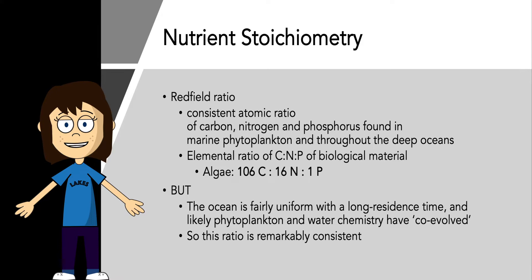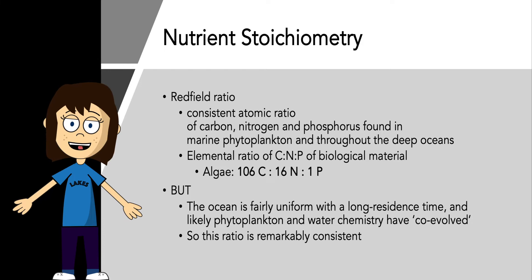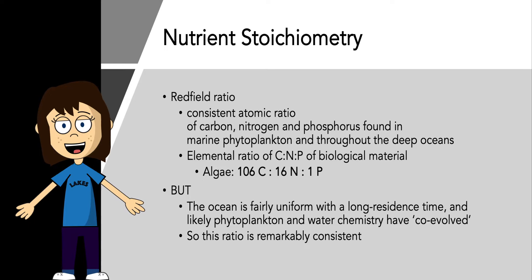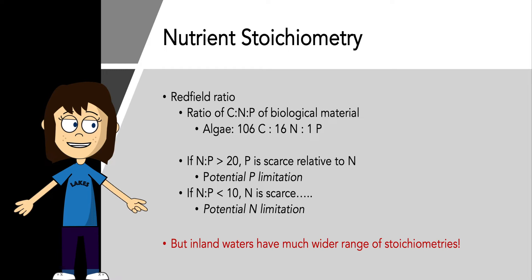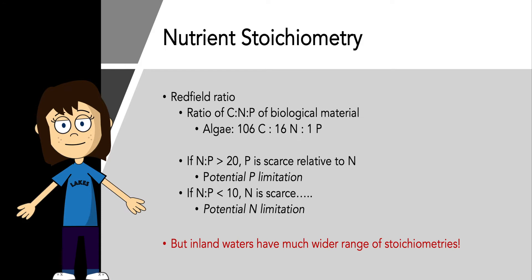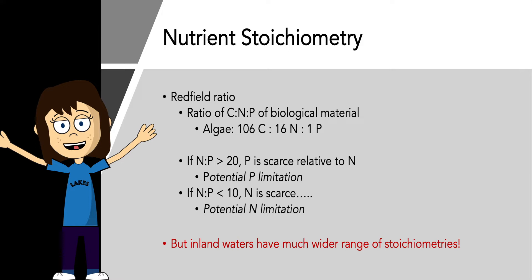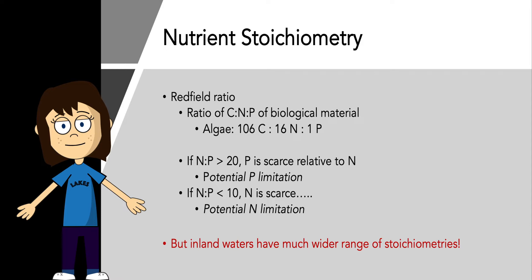This was expanded to include the ratio of carbon to phosphate of 106 to 1, and this has become known as the Redfield Ratio — a consistent atomic ratio of 106 carbon to 16 nitrogen to 1 phosphorus found in marine phytoplankton throughout the oceans. It's come to define our understanding of ocean biogeochemistry and is remarkably consistent. There's been a lot of work applying the Redfield Ratio to inland waters, but the ocean is very uniform with a long residence time. If the nitrogen to phosphorus ratio is greater than 20, phosphorus is scarce relative to nitrogen, indicating potential phosphorus limitation. If it's less than 10, nitrogen is scarce. However, this only holds for marine phytoplankton — inland waters have a much wider range of stoichiometries.